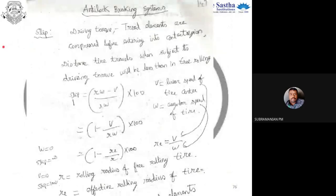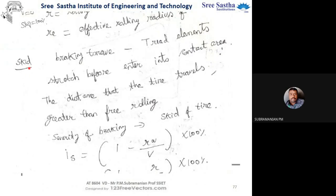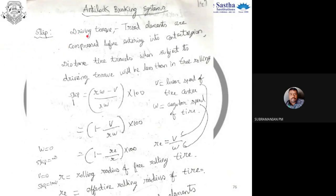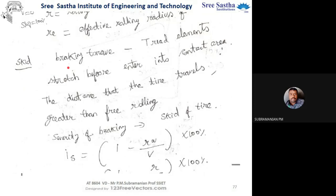Similar to slip, there is a term called skid. Slip happens due to driving torque, whereas skid happens during braking torque. During skid, the tire travels farther than in free rolling. For ABS design, it is important to understand skid and how it affects braking performance.